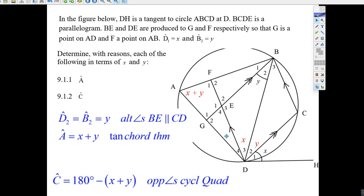To the circle ABCD, that quadrilateral going through there, and BCDE is a parallelogram. BCDE is a parallelogram means you got two sets of parallel lines here. BE and D are produced to G and F, so G is a point on AD and F is a point on AB.